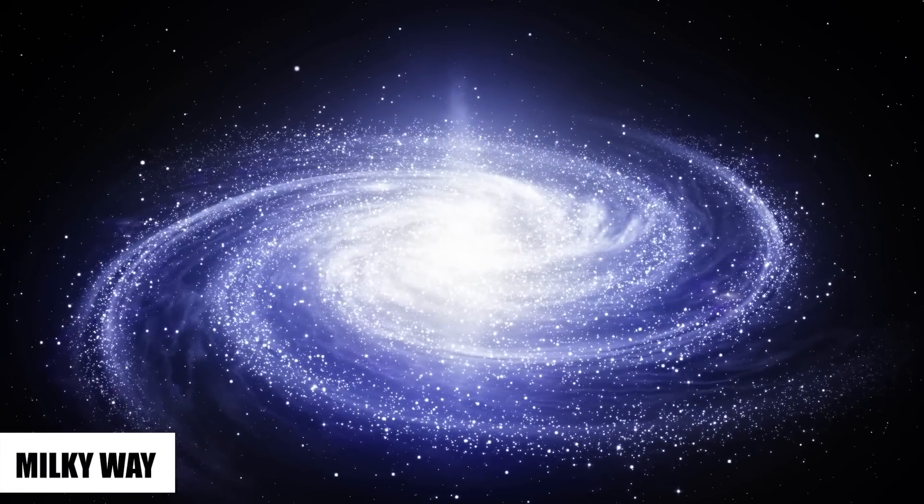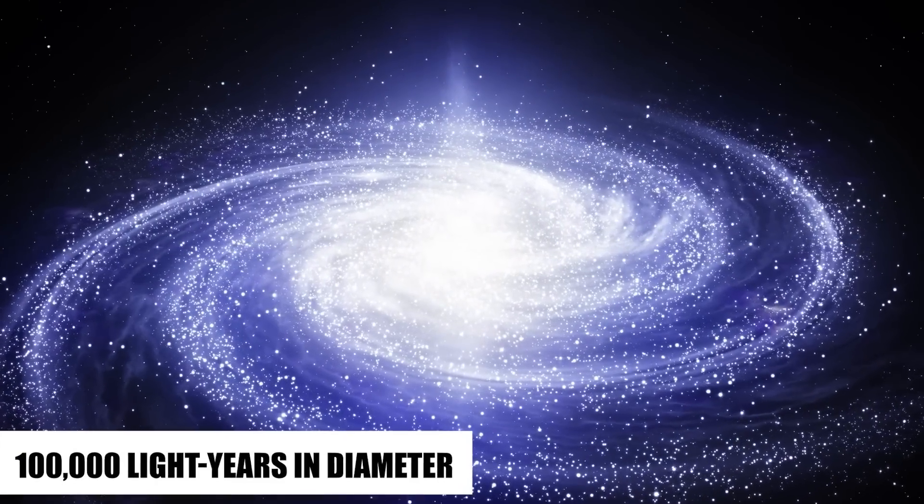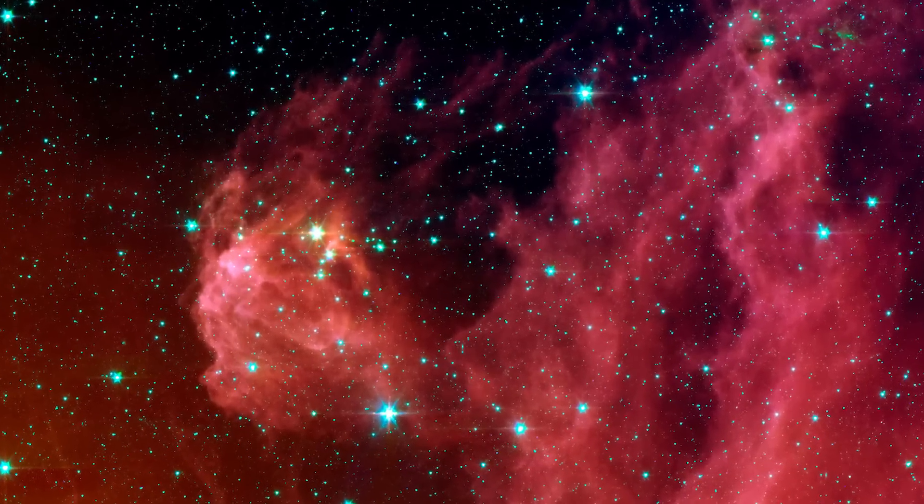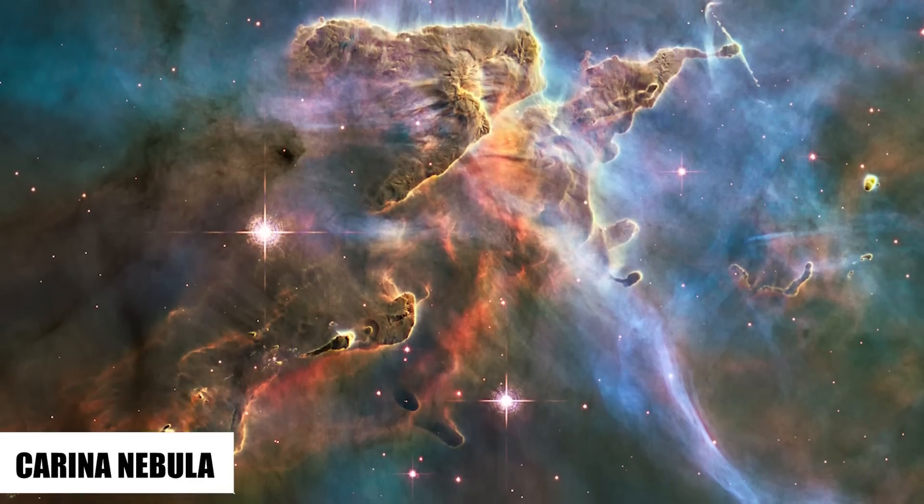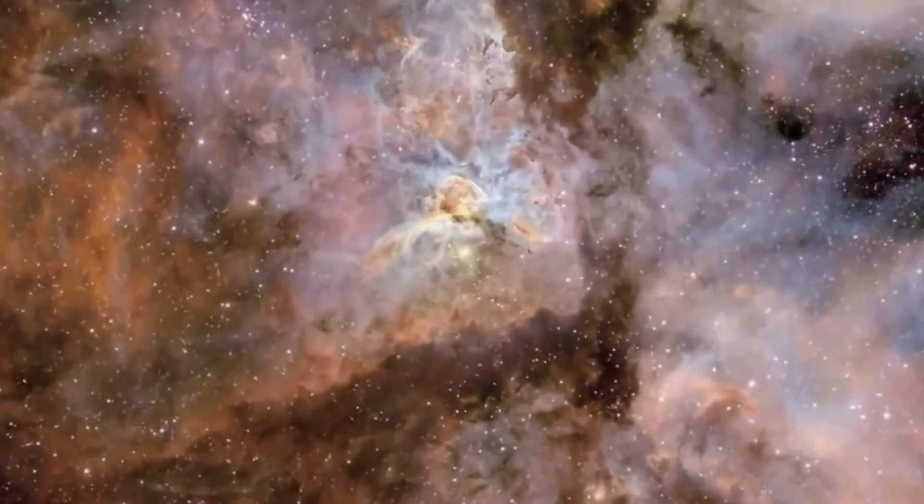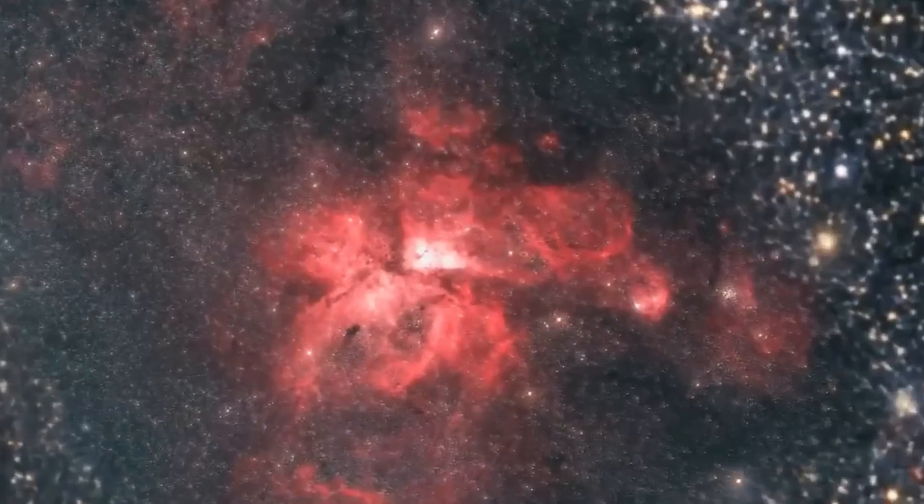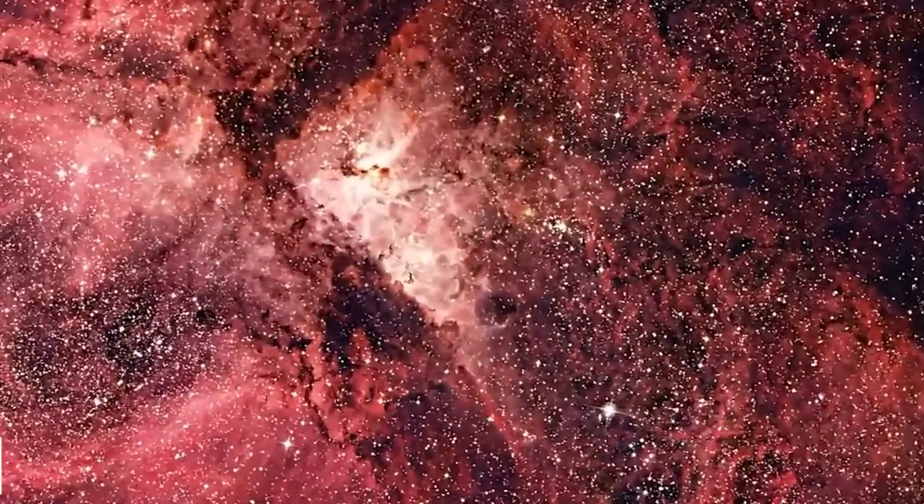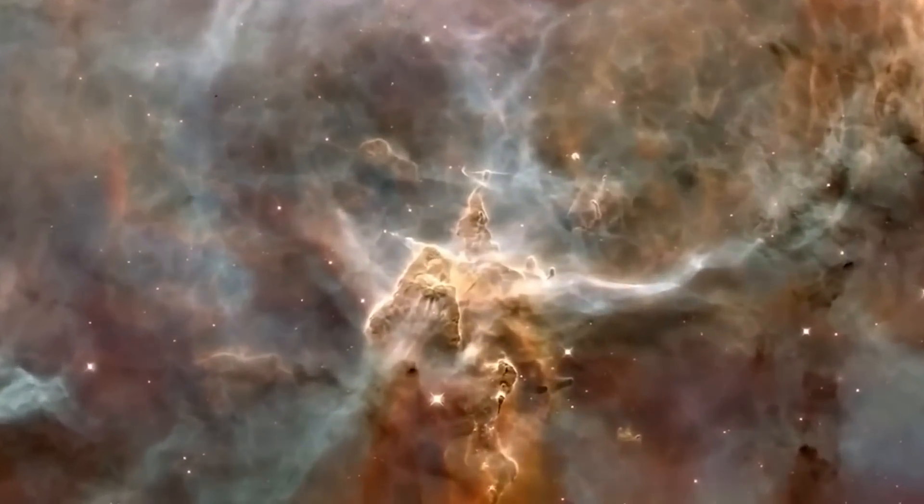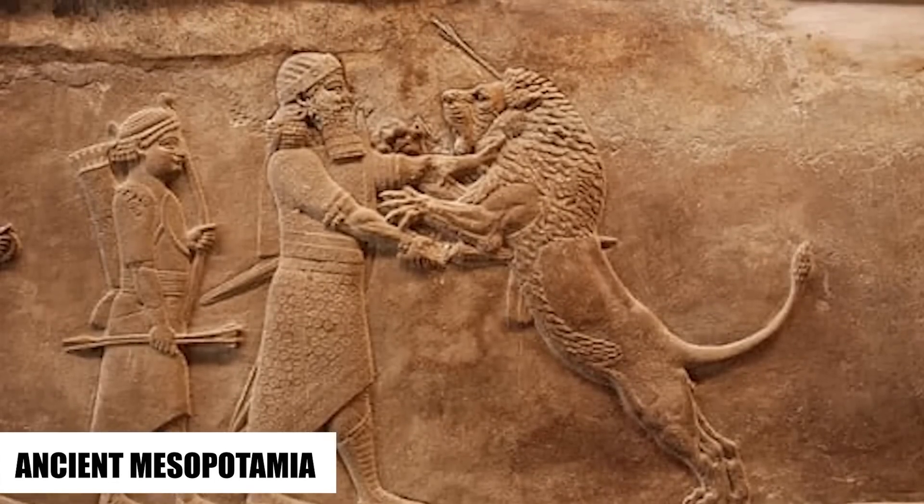Our galaxy, the Milky Way, is estimated to be more than 100,000 light-years in diameter. And the stunning infant stars that can be seen in the JWST image of the Carina Nebula are located 7,500 light-years away. To put it another way, the depiction of this nebula comes from a period of time that is around 2,000 years before the time when it is believed that the art of writing was first developed in ancient Mesopotamia.